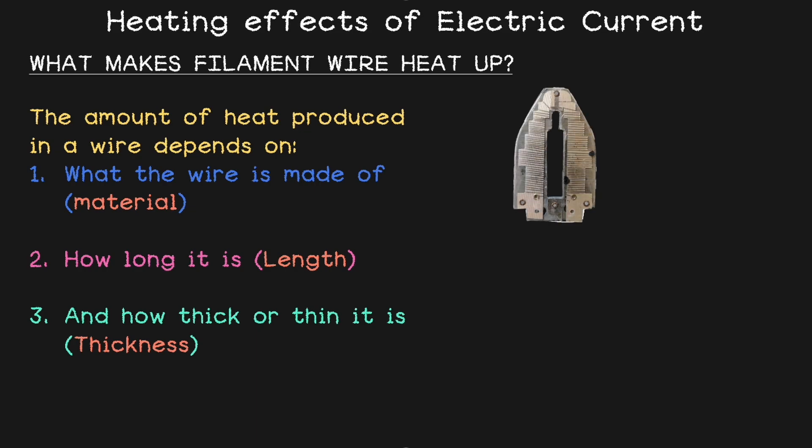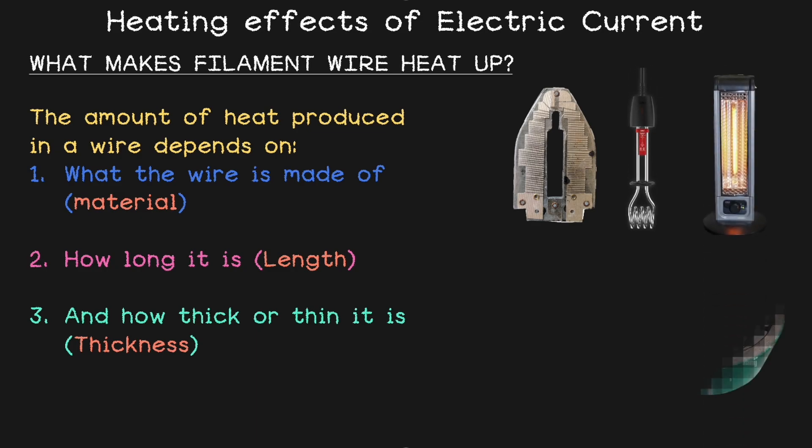You've probably seen electric iron, geysers, room heaters, even electric stoves. All of them work using the heating effect of electric current. They have special coils that are made of specific material and they heat up fast and do the job of heating.